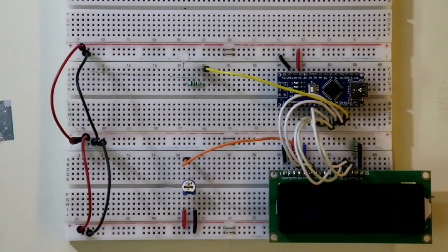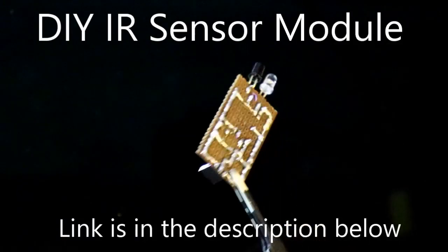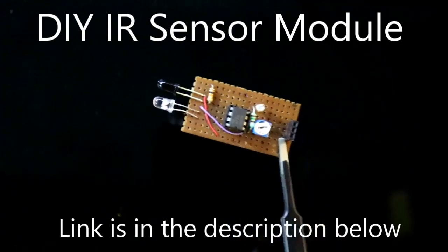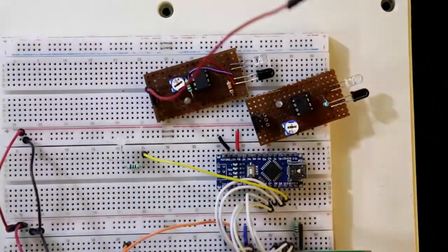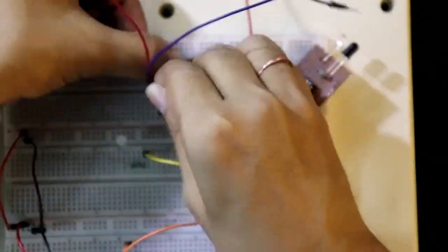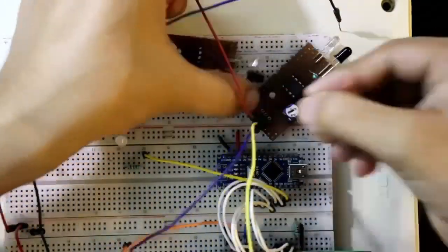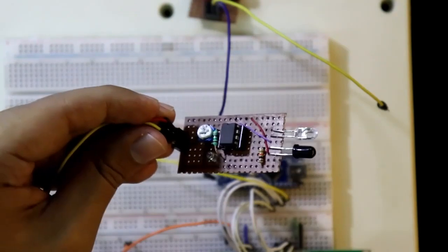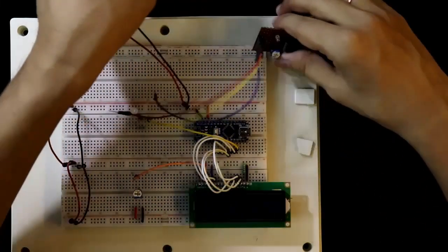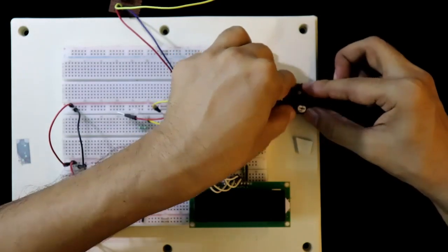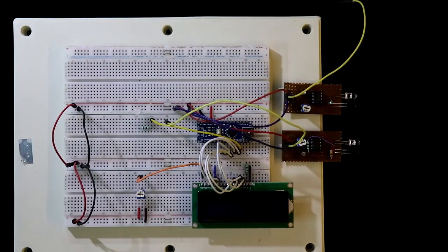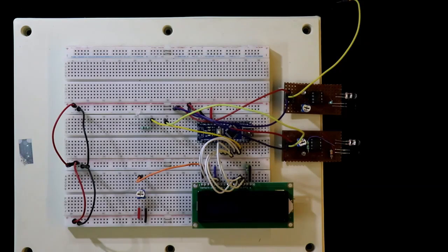Now we have to connect the IR sensor. We need two of them. Connecting its positive and the negatives. The middle pin is Vout. Positive and negatives are connected. Now this should be the out sensor and this should be the in sensor.